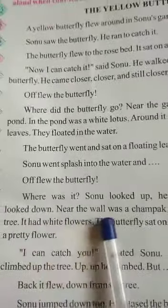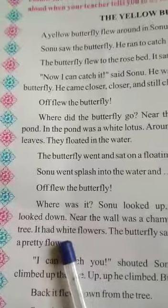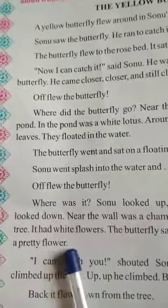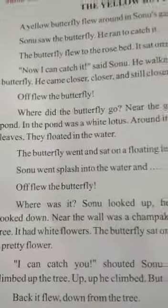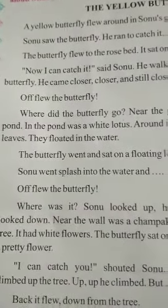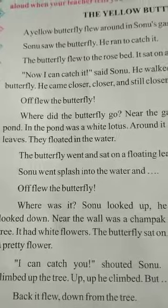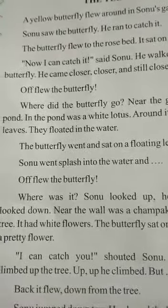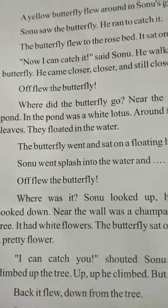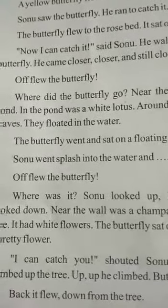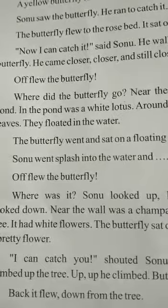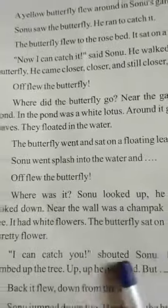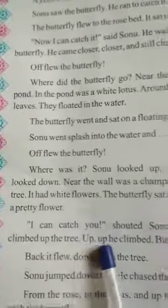He looked down. Near the wall was a chumpak tree. It had white flowers. The butterfly sat on the pretty flower. Sonu ने देखा कि butterfly कहाँ गई. Sonu ने ऊपर देखा, नीचे देखा लेकिन butterfly दिखी नहीं. और वहाँ पे एक दीवार थी, उसके बाजू में एक chumpak tree था. वो tree पे white color के बहुत pretty flowers थे, और उन pretty flowers पे butterfly फिर से जाके बैठ गई.